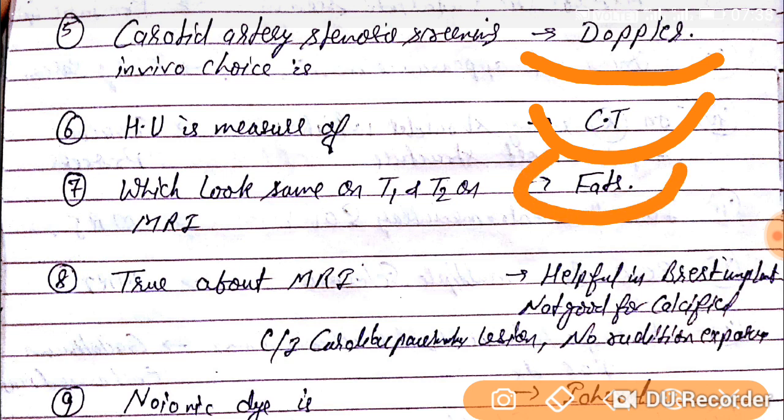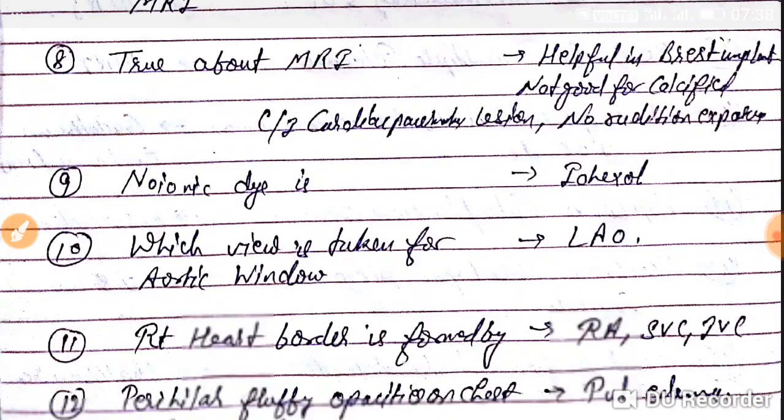Question number eighth — true about MRI. MRI is helpful in breast implant evaluation. It is not good for calcified lesions. It is contraindicated in patients with cardiac pacemaker implantation. There is no radiation exposure in MRI.